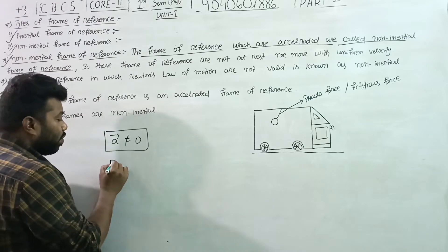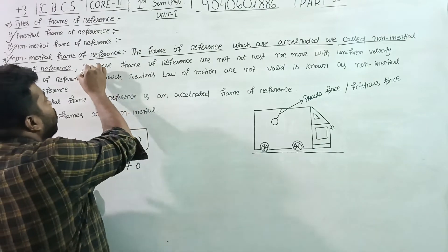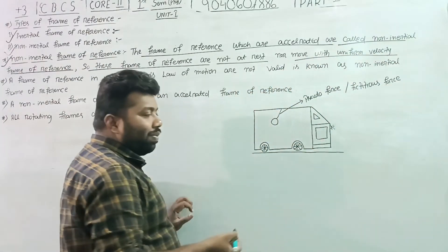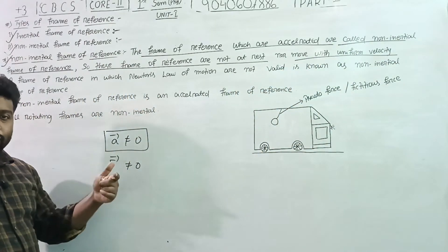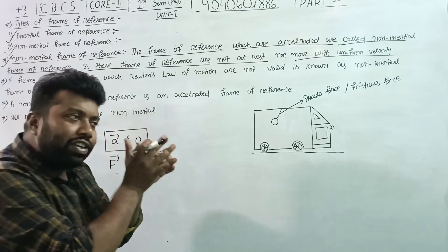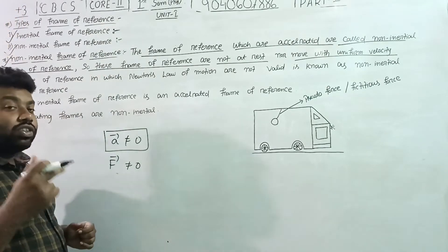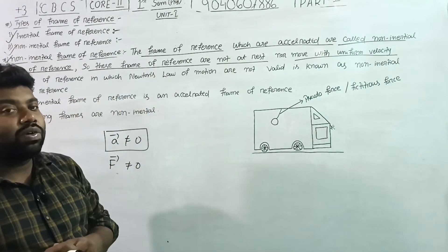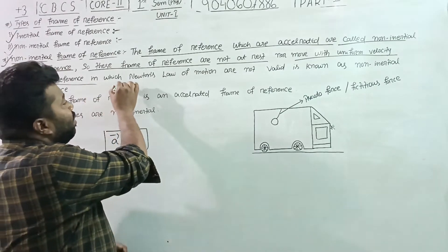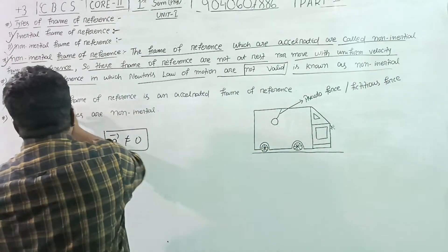If the acceleration is not equal to zero, then a net force is applied. That means this frame of reference is not at rest and not in uniform velocity. The frame of reference which is not at rest and not at uniform velocity is a non-inertial frame of reference, in which Newton's law of motion is not valid.